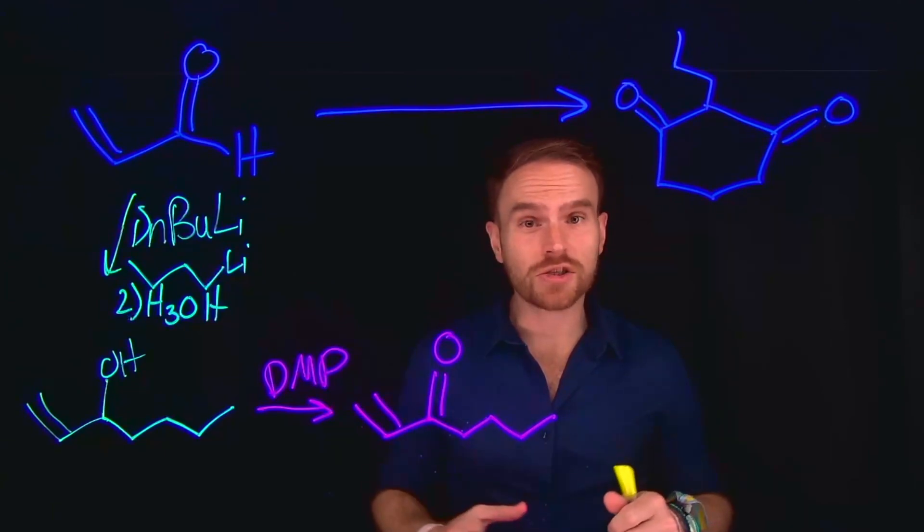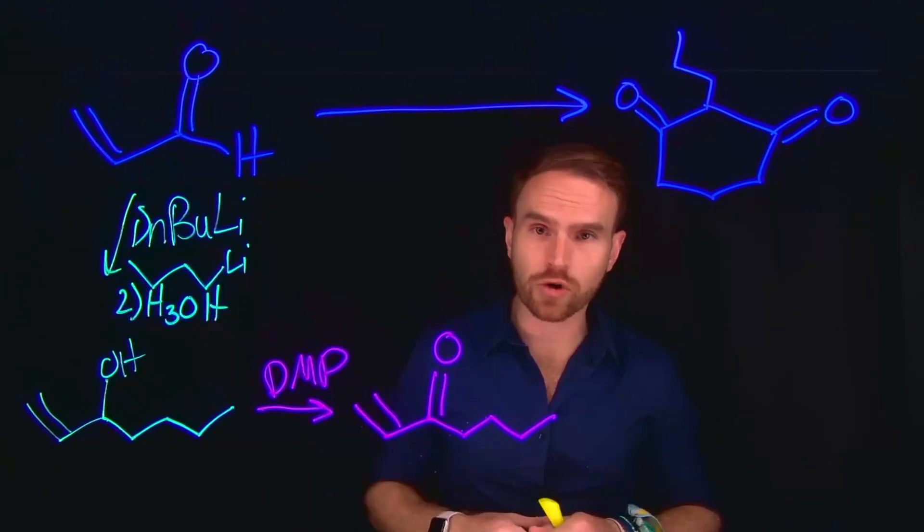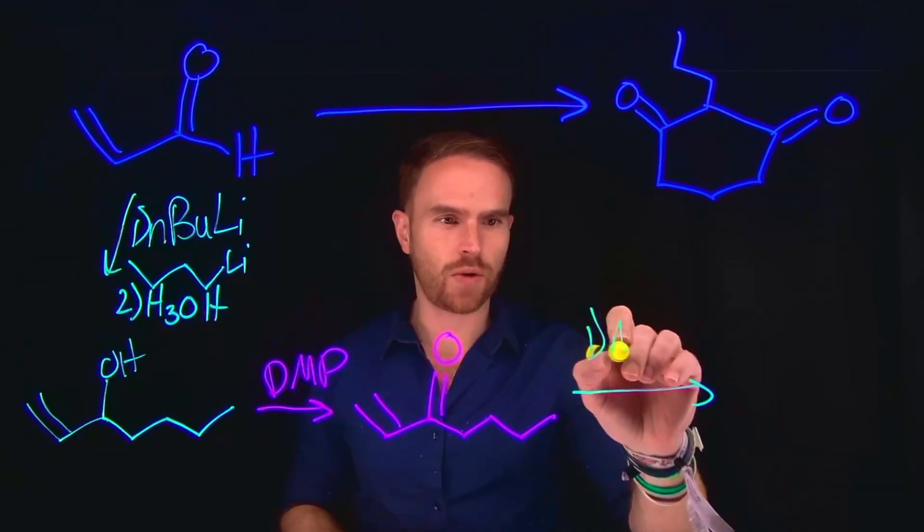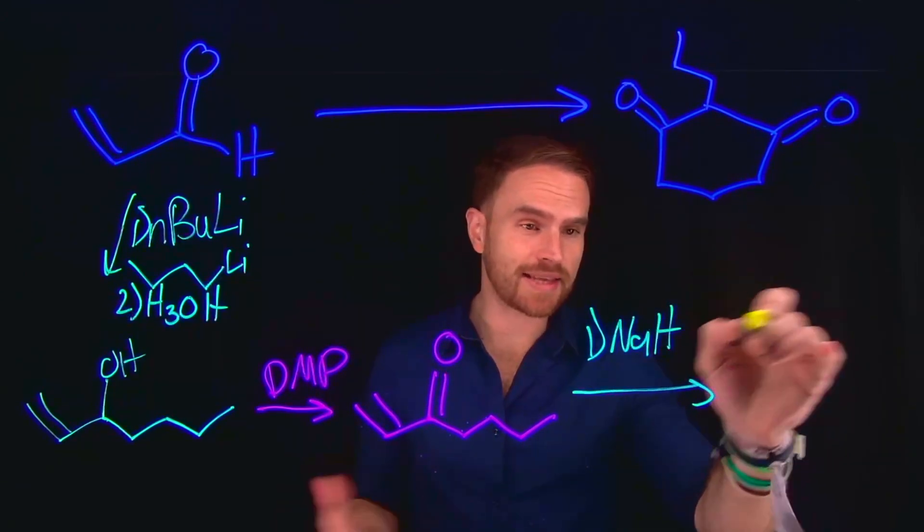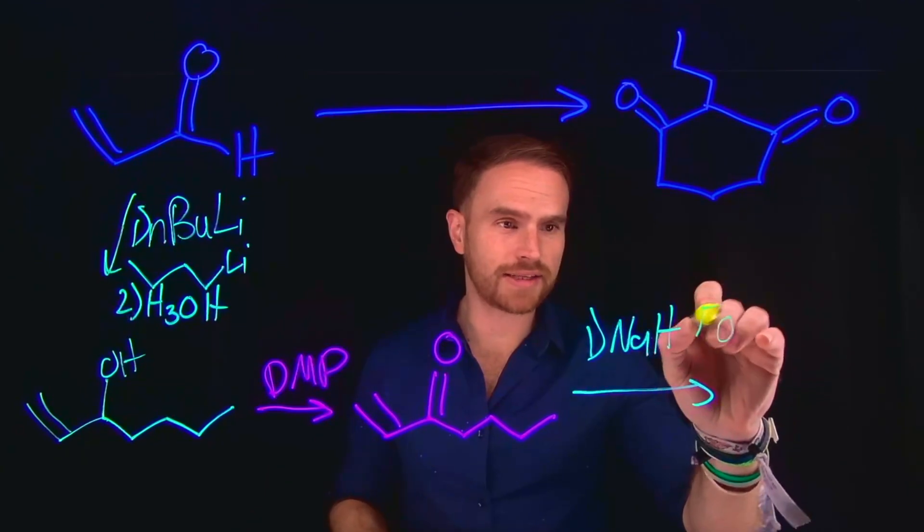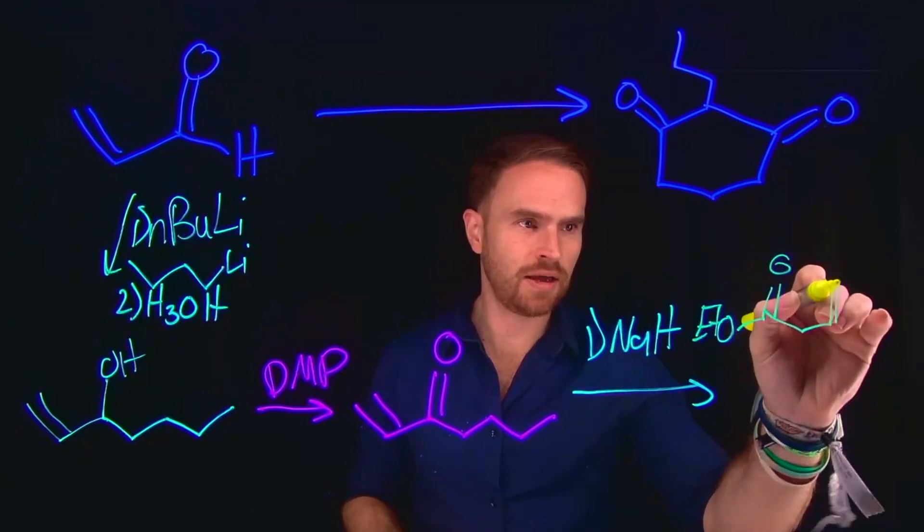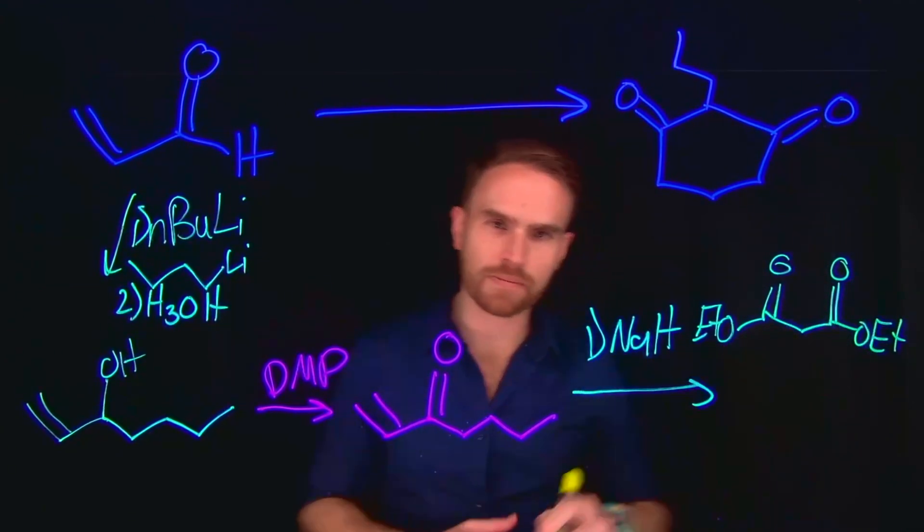And now from here, we can do another Michael addition, this time at the 1-4 position, so this terminal carbon of the alkene. If we take a diester species and NaH, so NaH is going to allow us to deprotonate the alpha carbon of a diester. So if we have this diester species, then we can deprotonate this alpha carbon position.